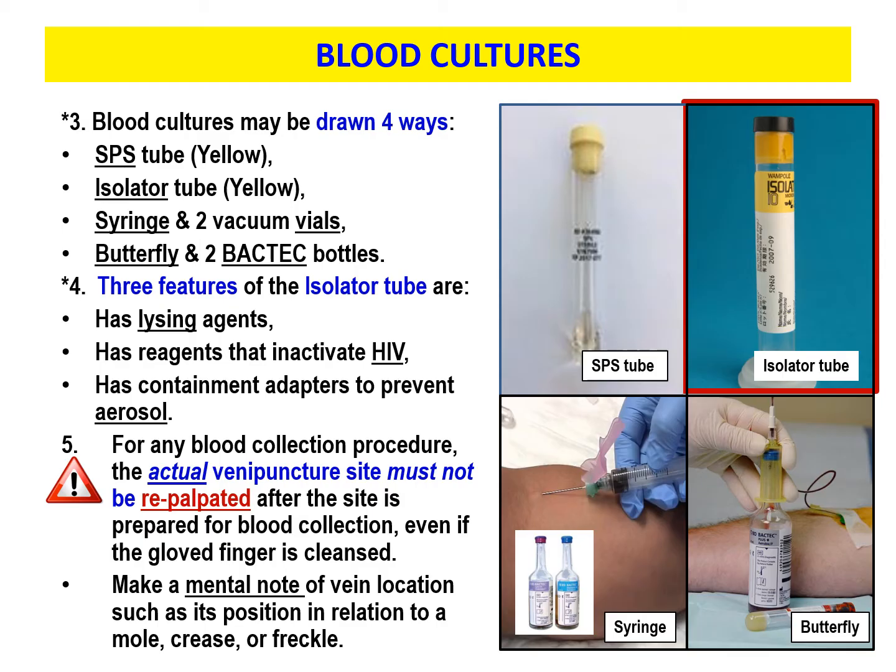Blood cultures are typically drawn four different ways. You have the SPS tube, which is yellow. Then you have the isolator tube — it looks different with a yellow and black stopper on top — but it is a yellow-top tube. Remember, if drawn for blood cultures, it's drawn first.